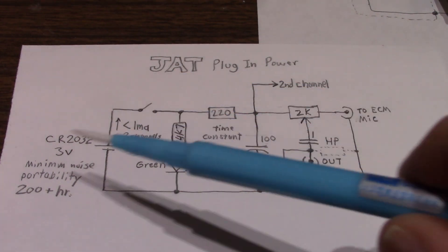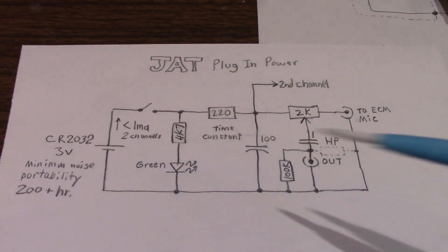So I want to power it with the CR2032 lithium coin cell. The reason for that is, well, I want it to be pretty small. Of course, it's got to be portable for field recording. Battery supply is going to give you minimum noise.